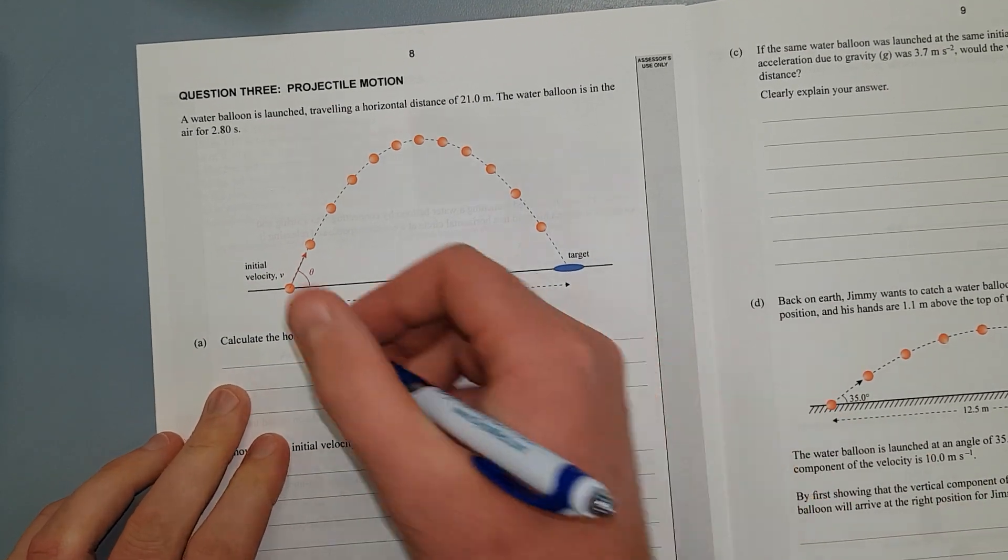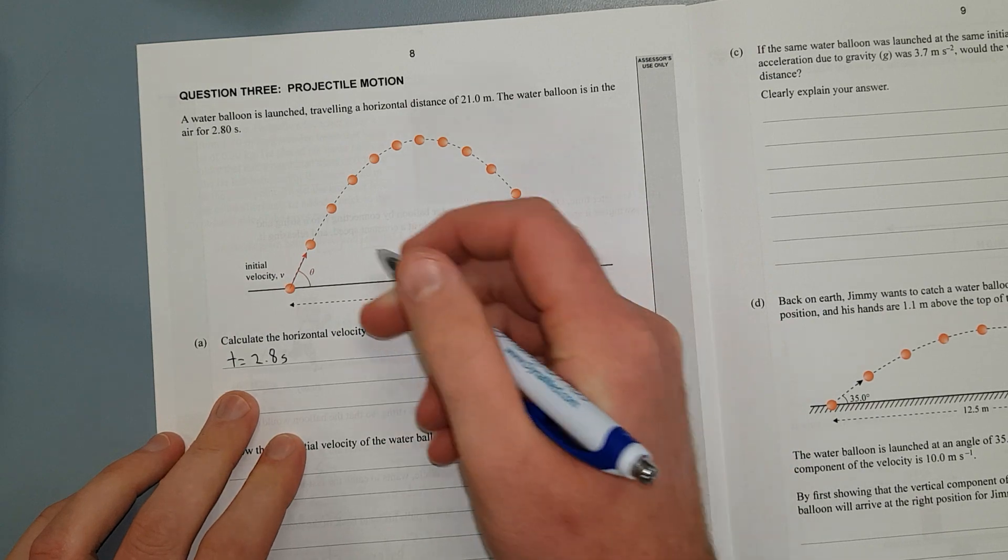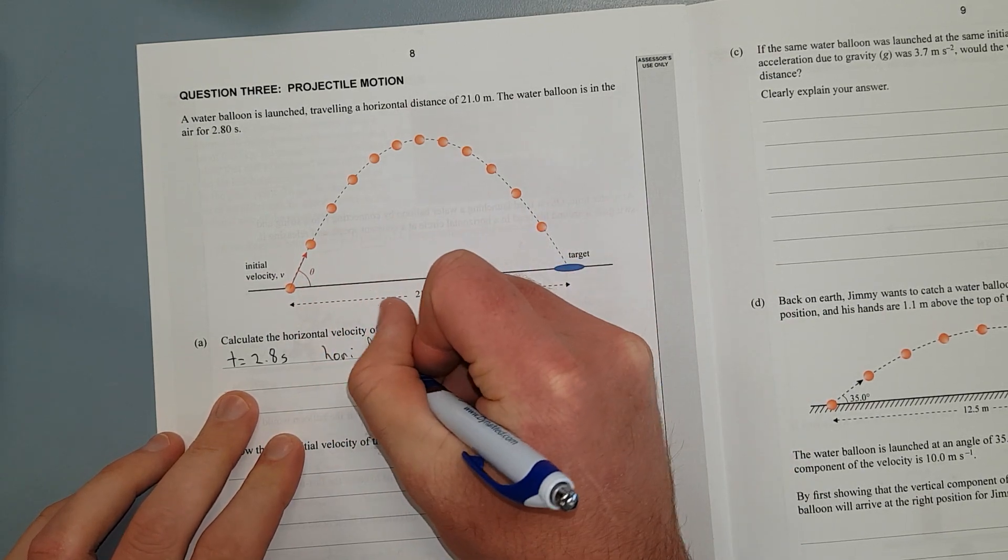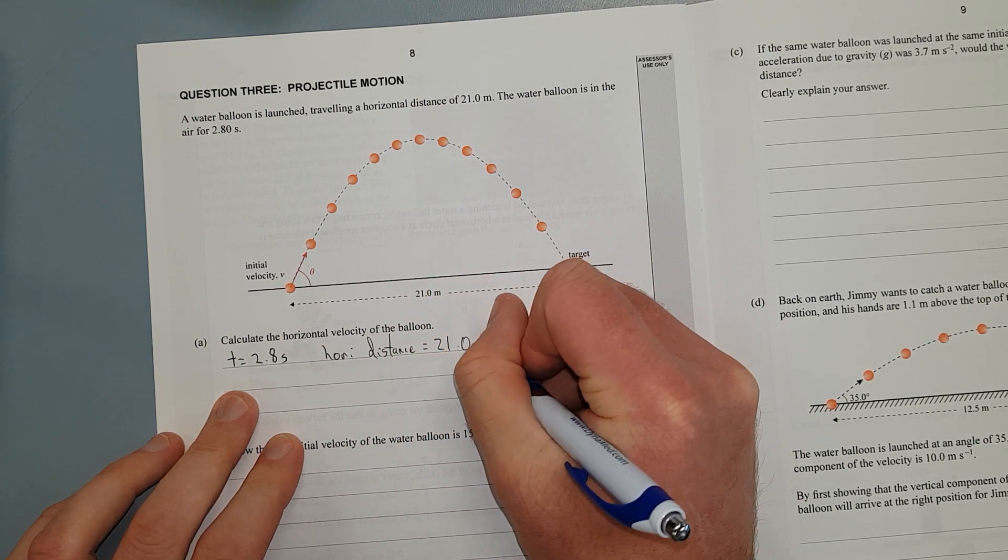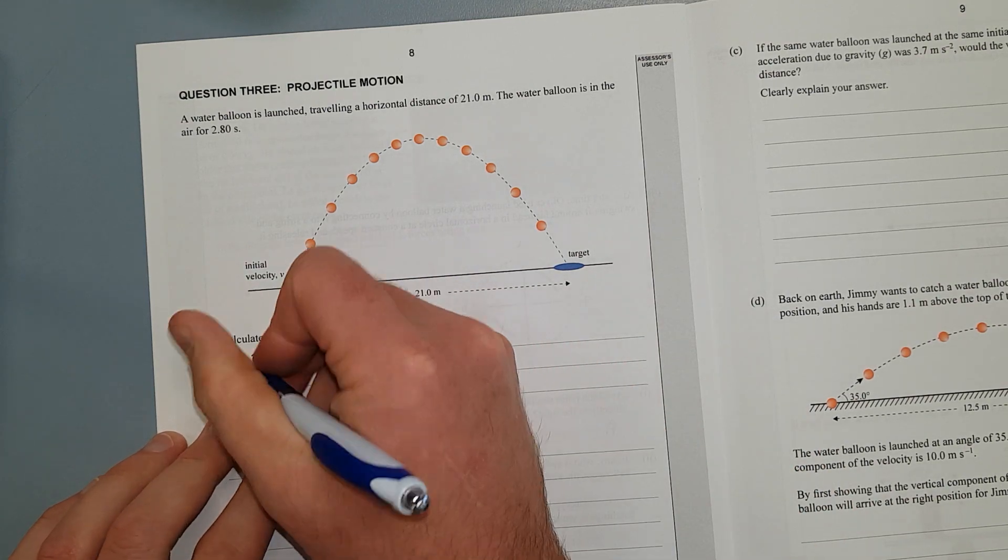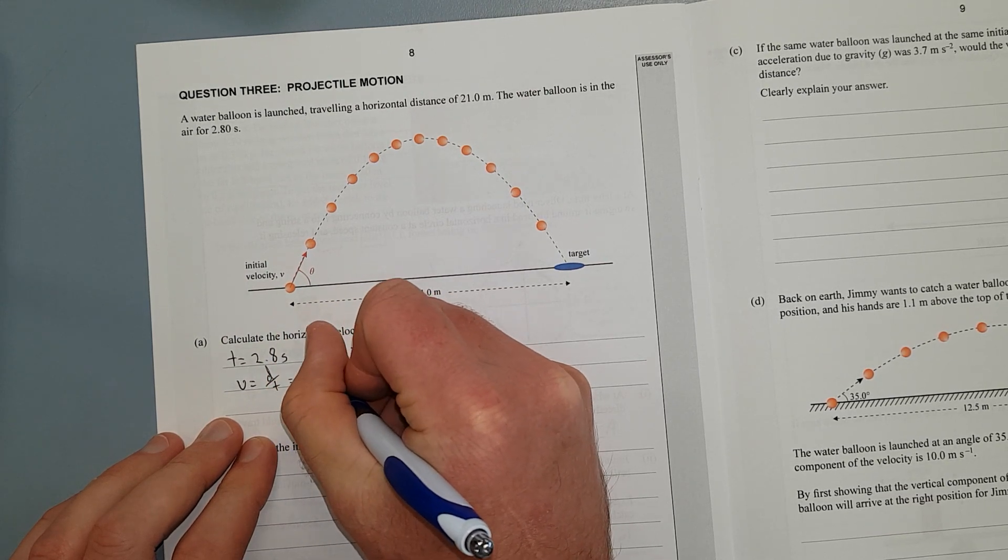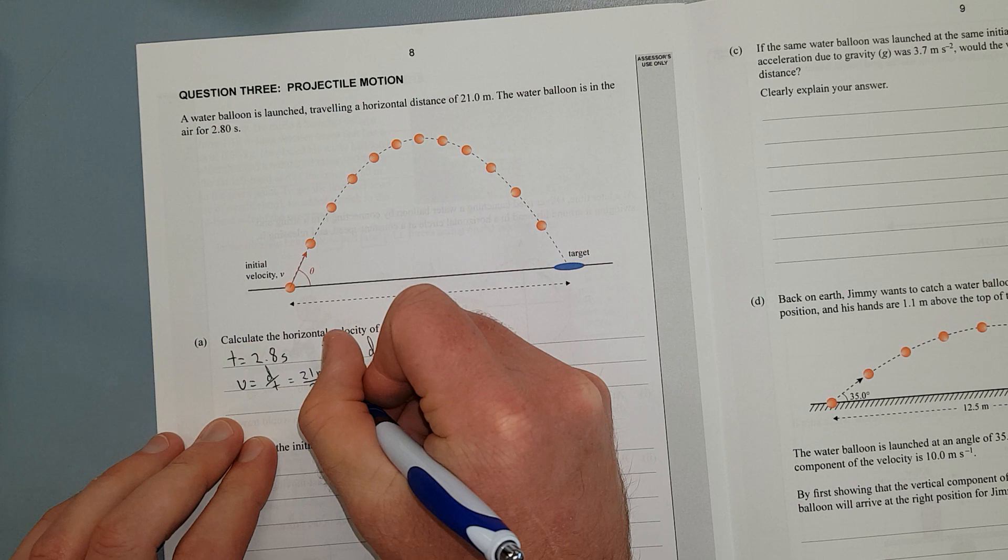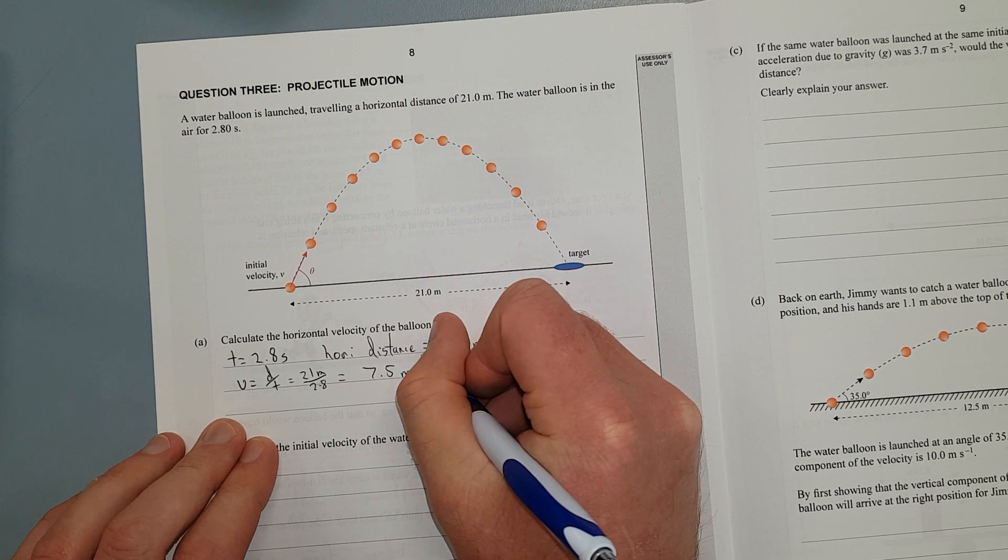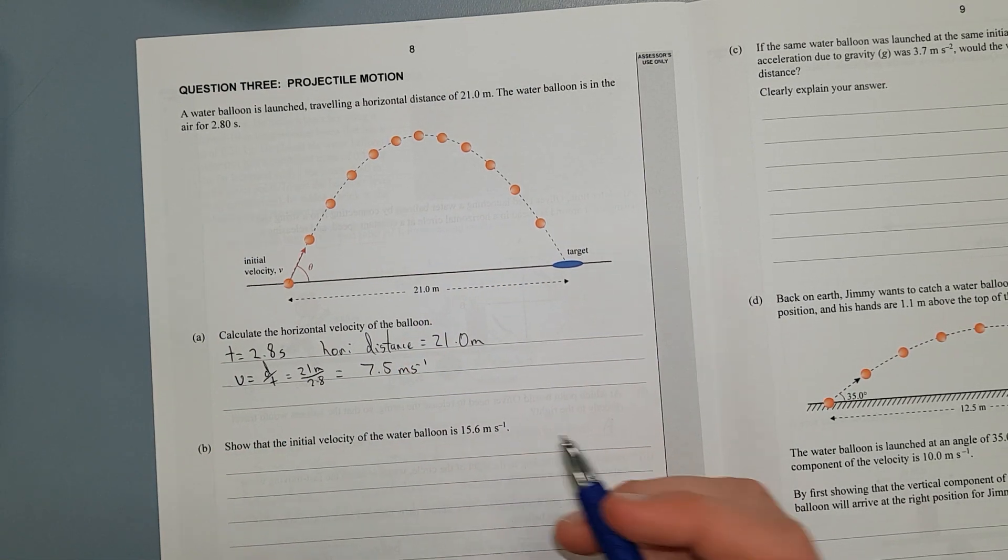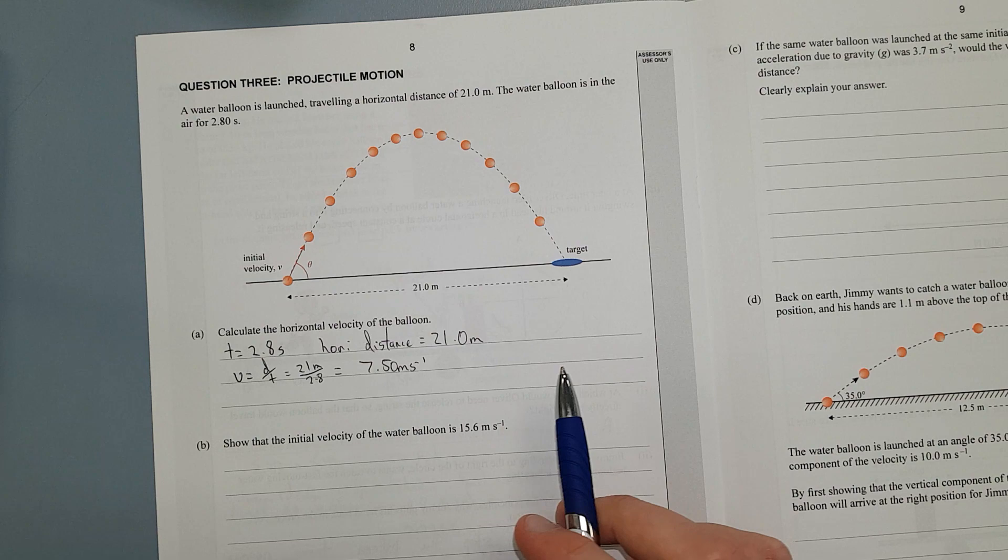Calculate the horizontal velocity of the balloon. So we'll just write down what we've got first. We have the time that is in flight, time equals 2.8 seconds. And horizontal distance is 21.0 metres. In other words, velocity equals distance over time. 21 metres divided by 2.8 seconds should give me 7.5 metres per second. And maybe I should chuck in 7.50 because everything here is 3 significant figures.